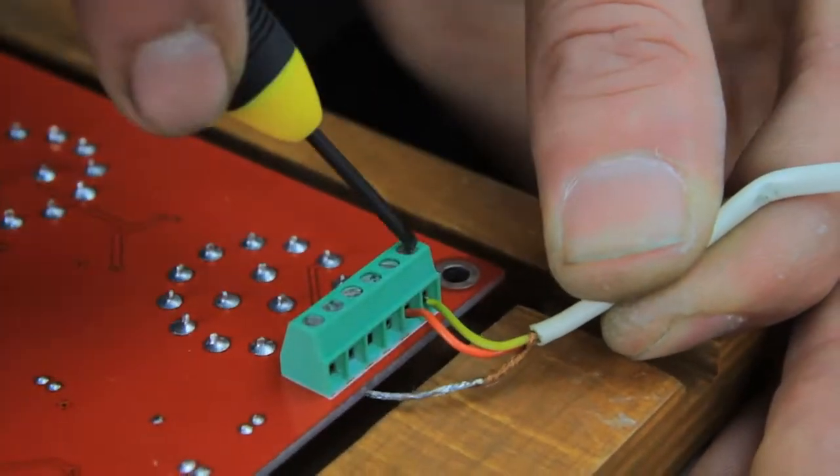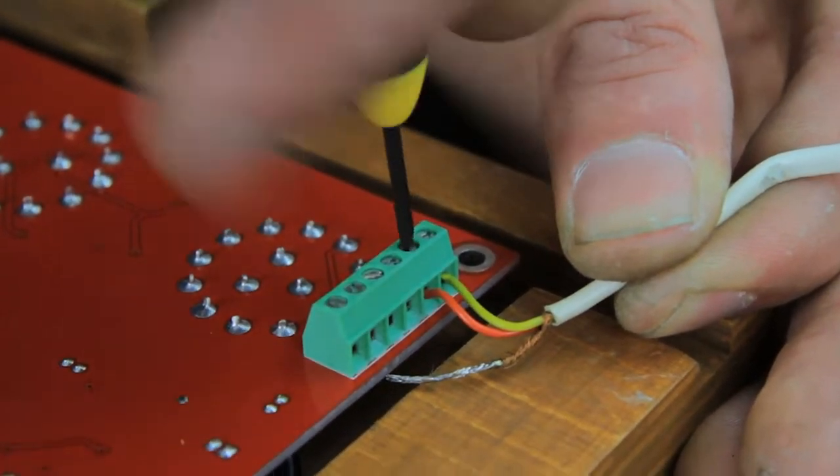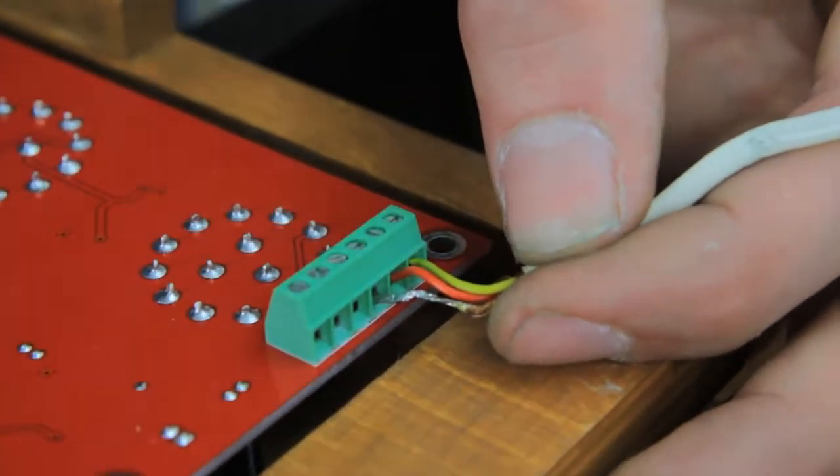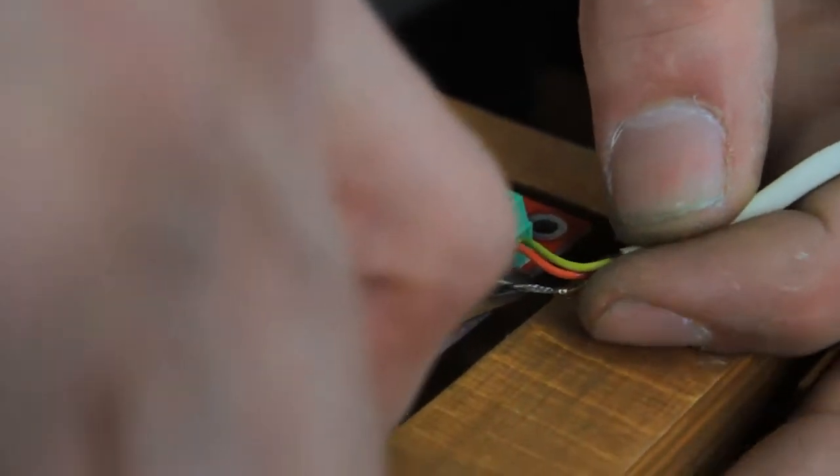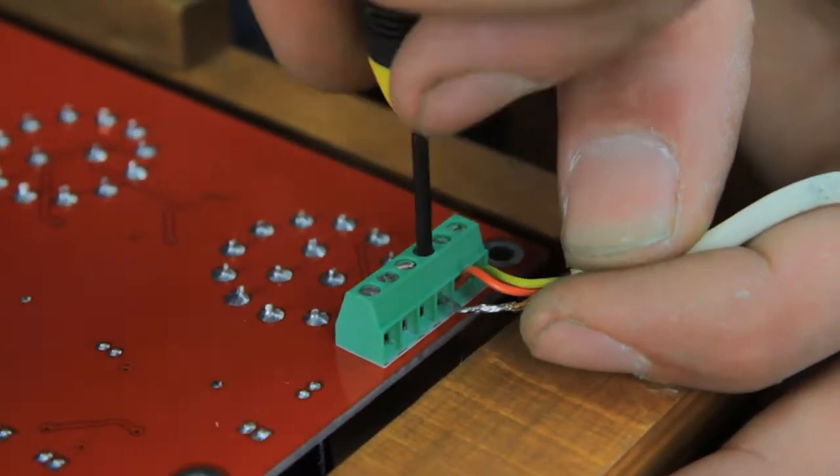It's time to install the pickup wires to the preamp. Starting with the top pickup wire, install the yellow, red, and shield wires into the terminal strip.